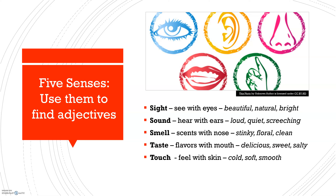Here on your screen you can see the five senses. Number one is sight — things that you see with your eyes. Some examples are beautiful, natural, bright. Number two is sound — things that you hear with your ears, like loud, quiet, screeching.